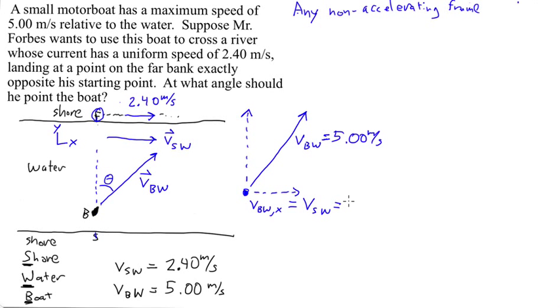And of course, VSW has to be 2.40 meters per second. And once you figure this out, it's pretty obvious how to solve the problem, because this vector up here is also VBWx, velocity of the boat with respect to the water in the x direction, and that has to be equal to 2.40 meters per second. So now we've just got a simple little triangle here, right? The hypotenuse has a magnitude of 5 meters per second, has a length of 5 meters per second. The short leg is 2.4 meters per second, so this is the right angle, and this is the angle theta we want to find.